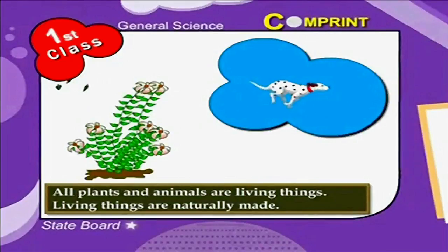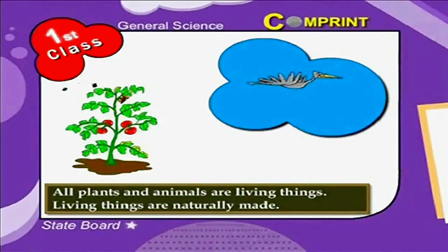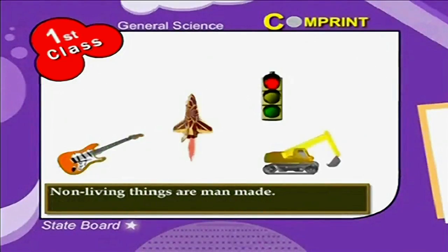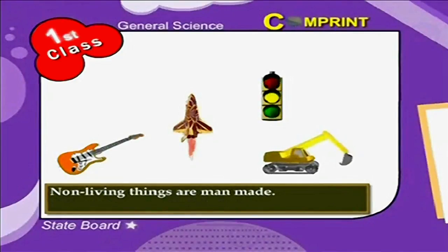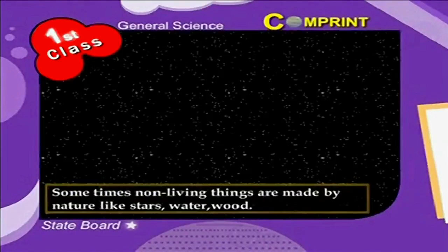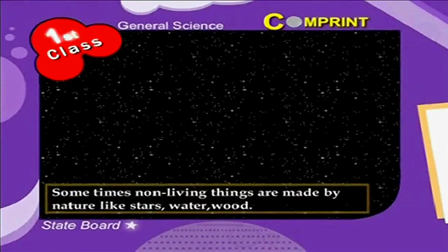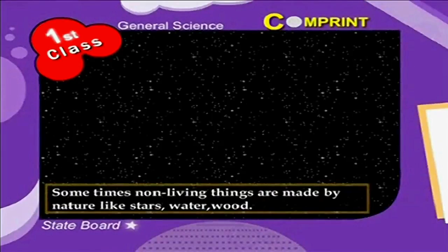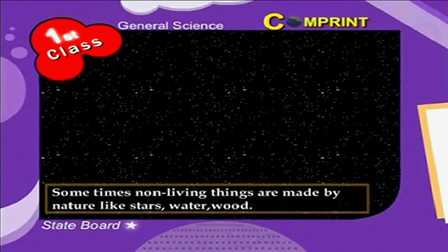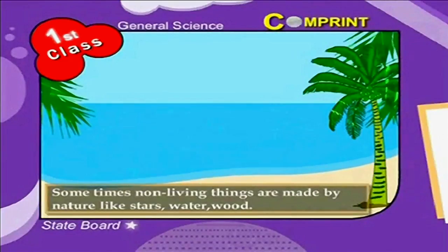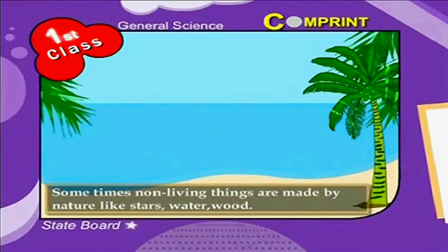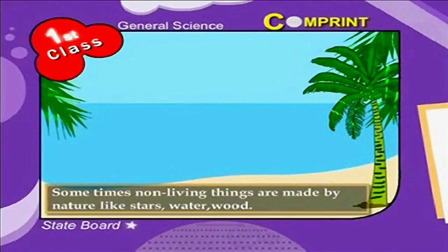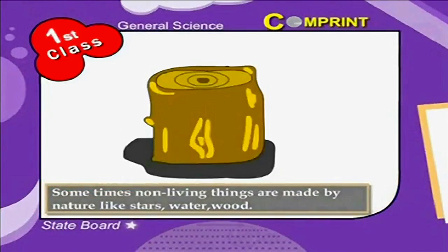Living things are naturally made. Non-living things are man-made. Sometimes non-living things are made by nature, like stars, water, and wood.